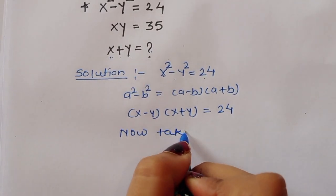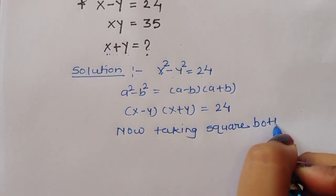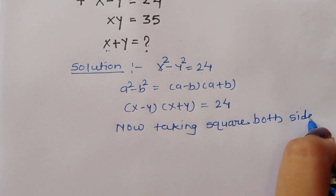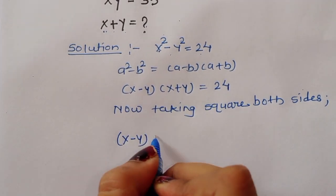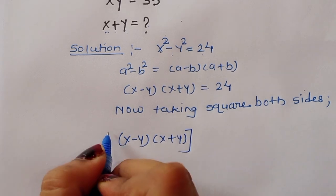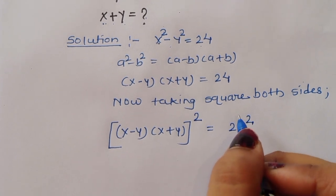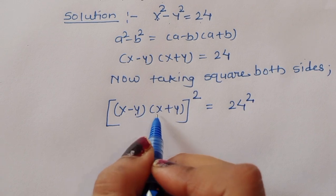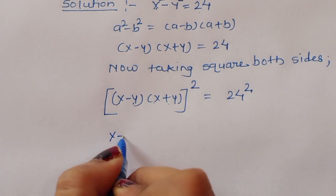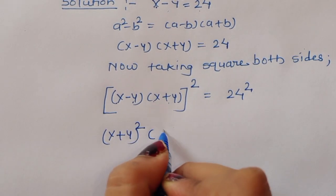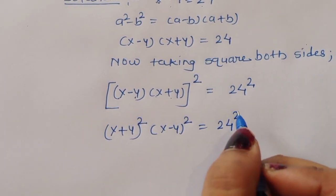Now we take the square of both sides. Then we will get x minus y times x plus y, whole squared, is equal to 24 squared. We can split this term and write x plus y whole squared times x minus y whole squared is equal to 24 squared.